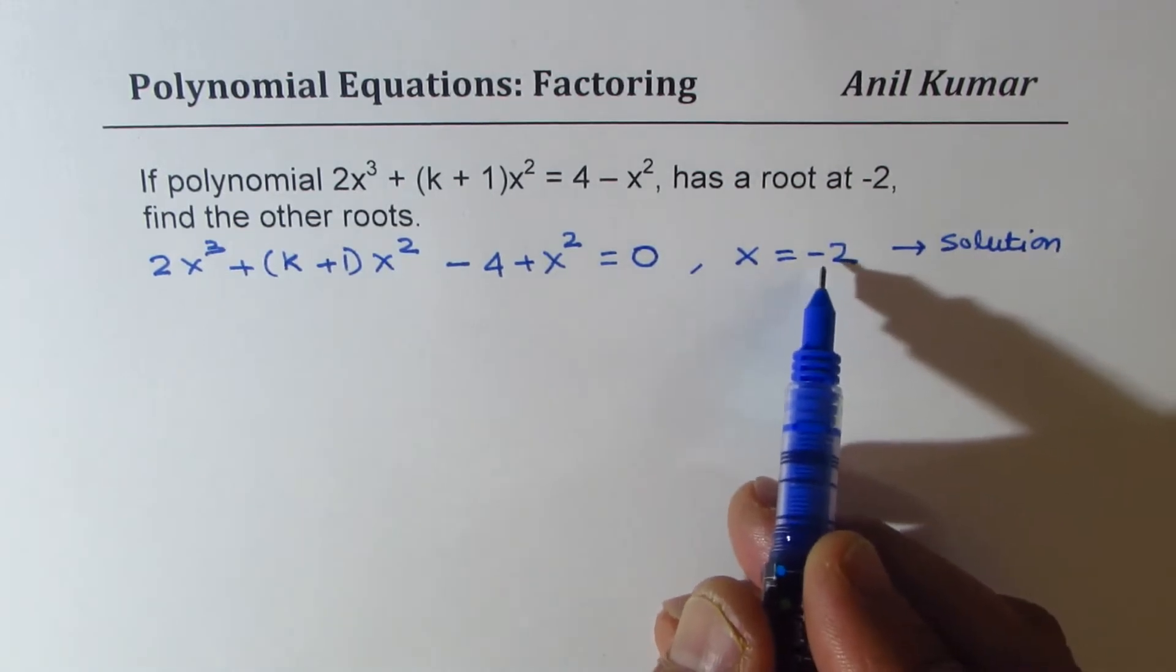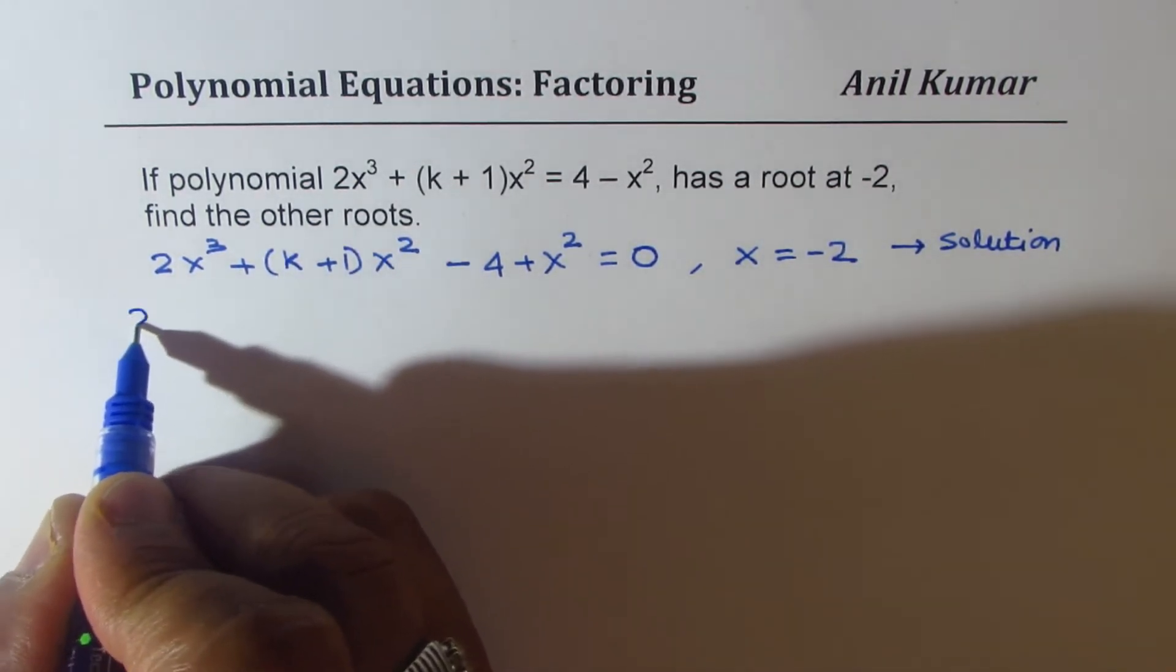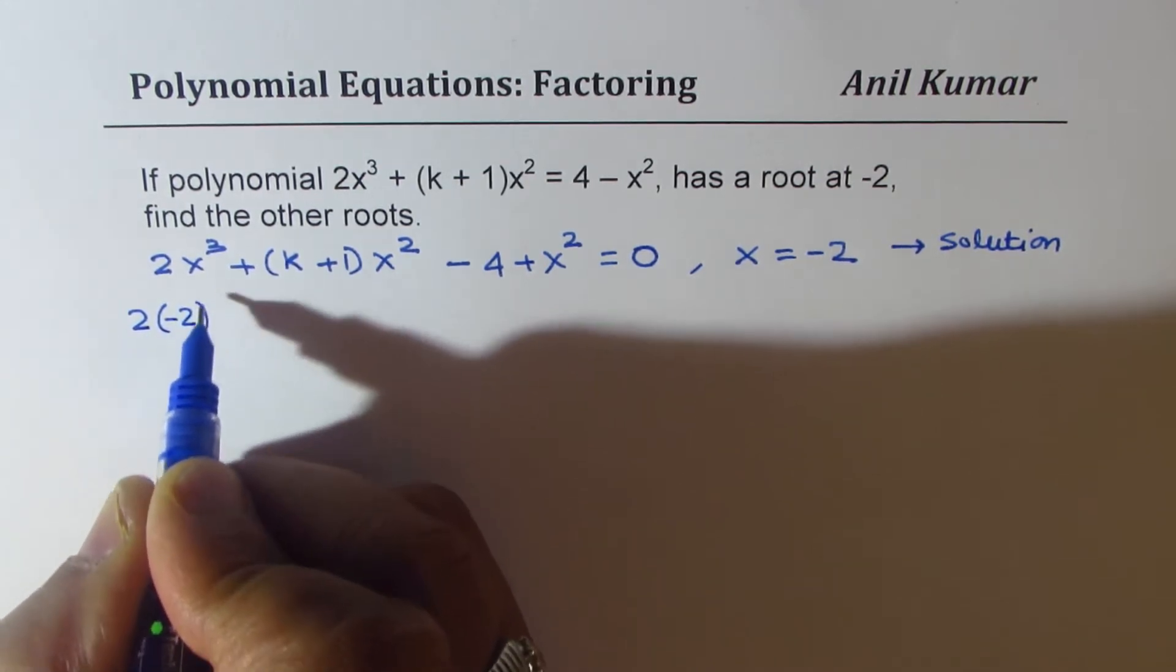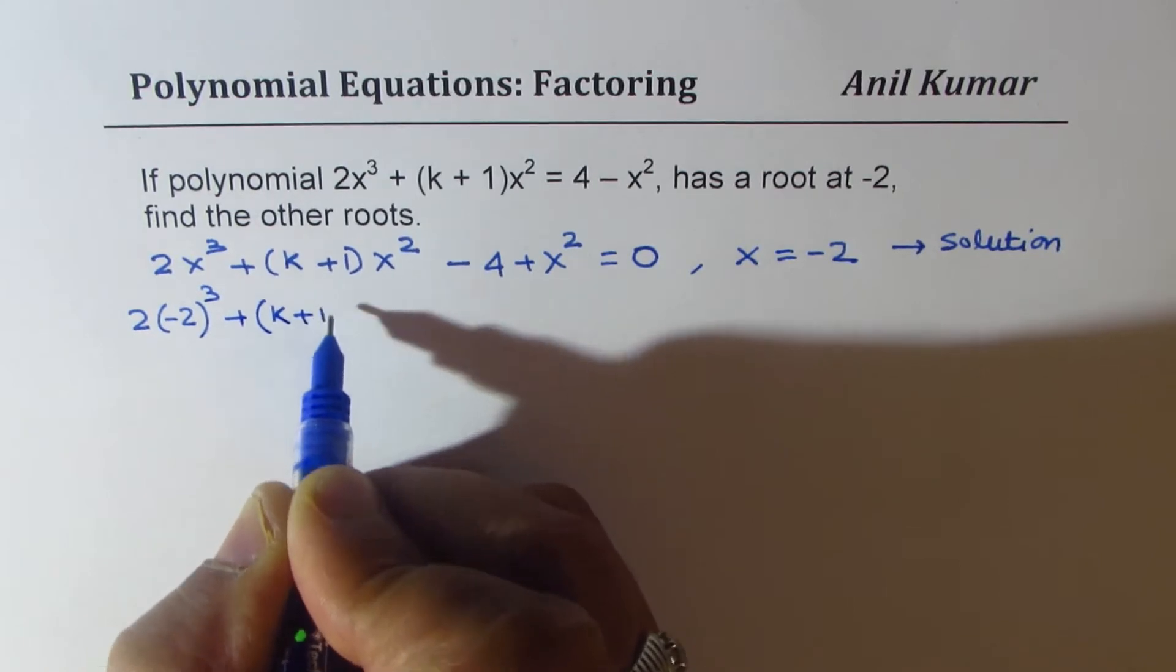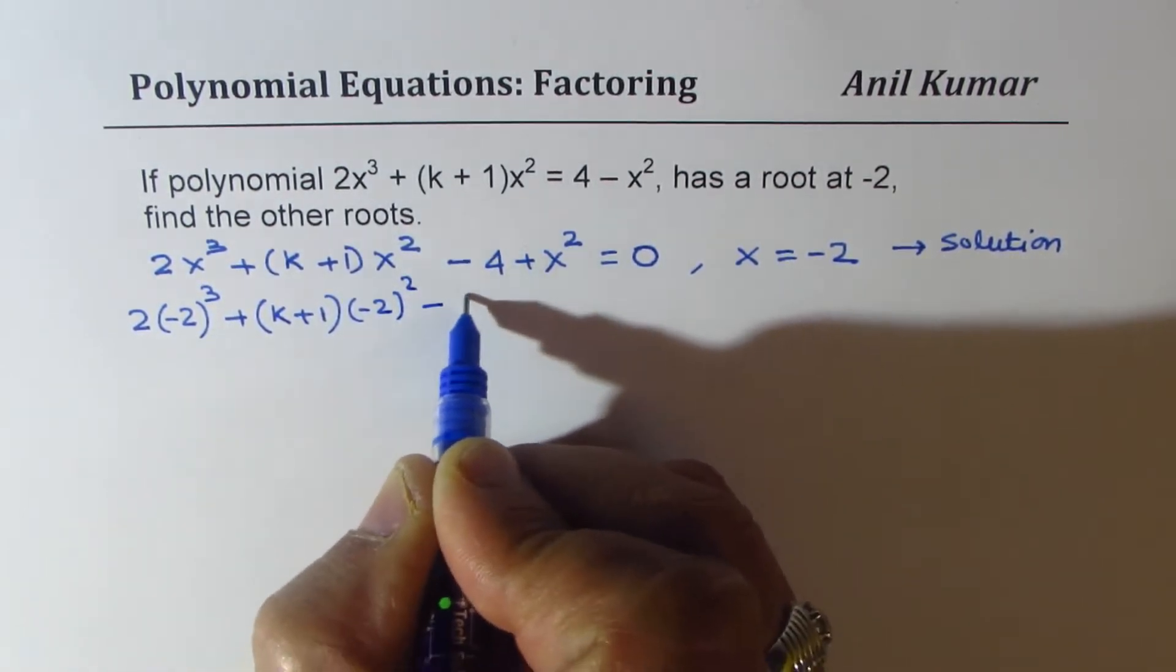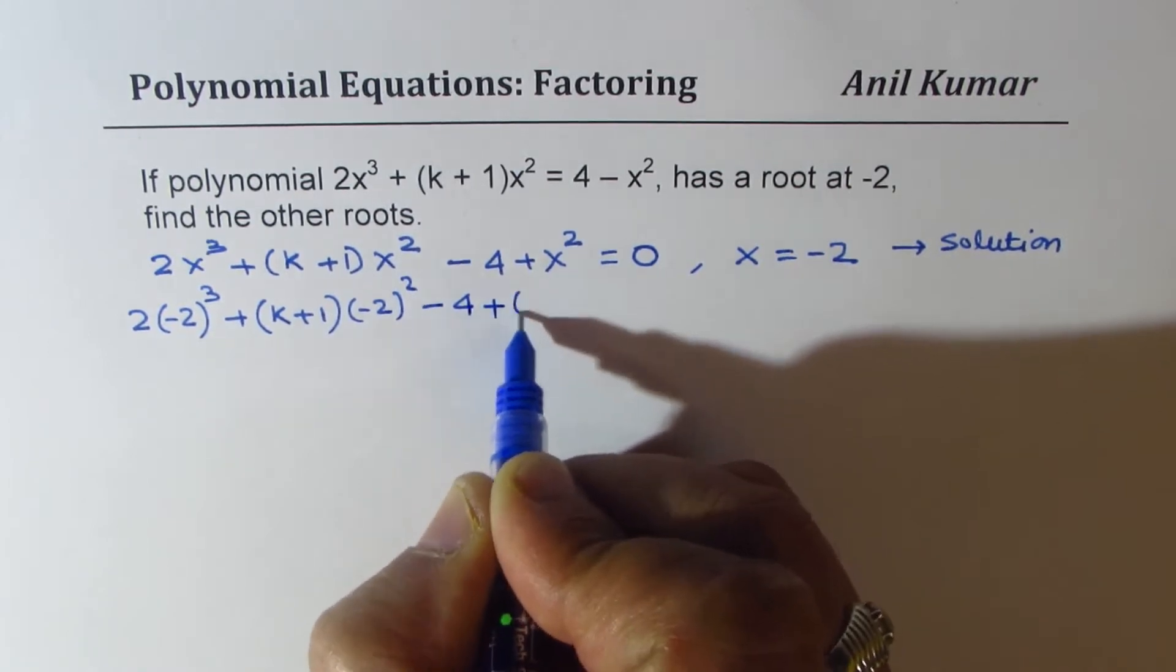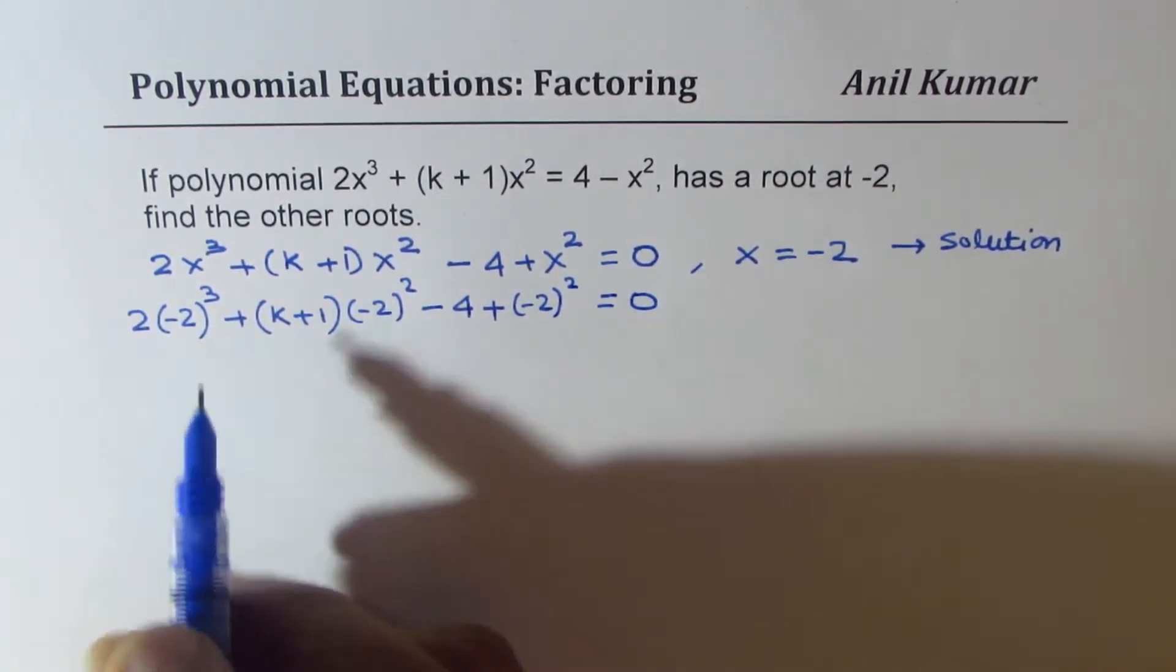So let's substitute -2 here. So when I substitute -2, I get 2(-2)³ + (k + 1)(-2)² - 4 + (-2)² equals to 0. So now let's calculate.